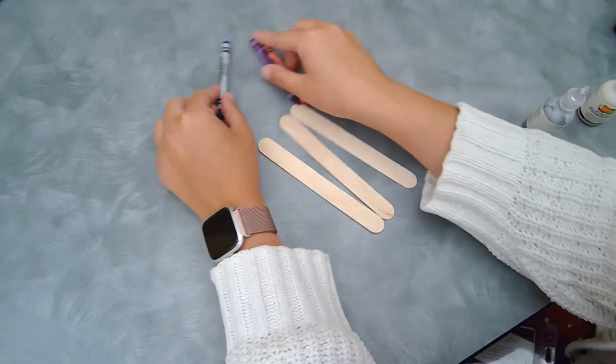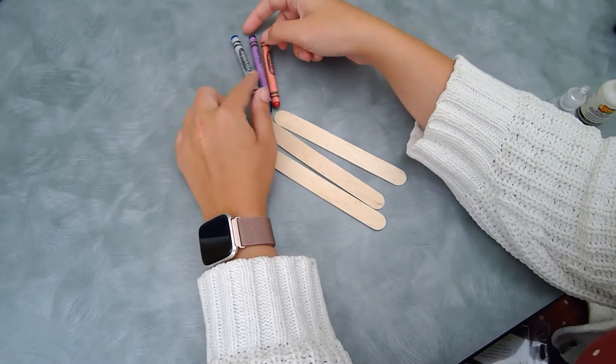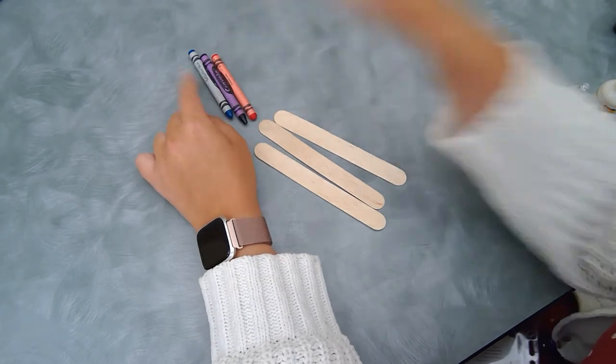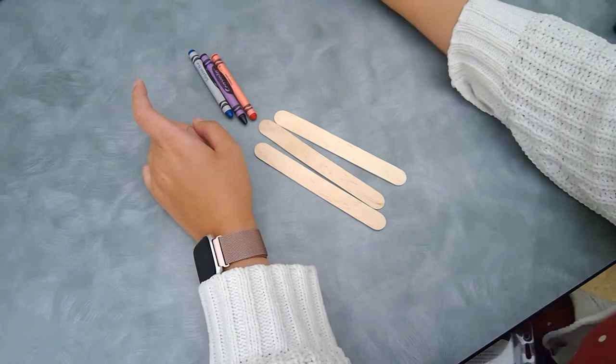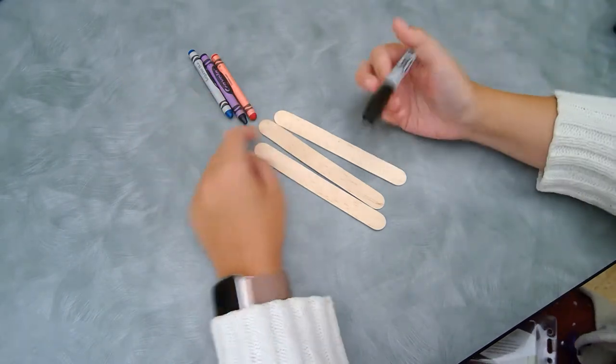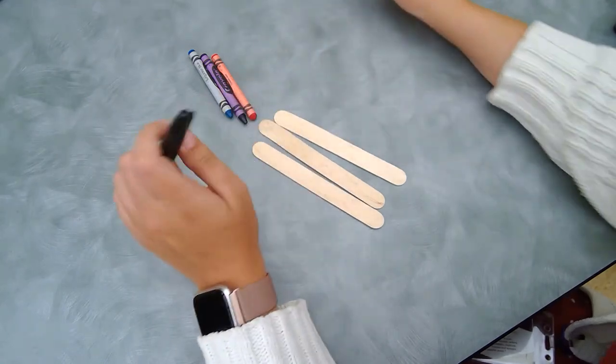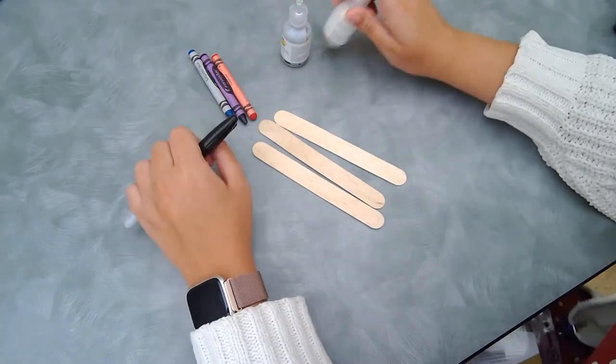You're gonna need some crayons, whatever colors you'd like. I am picking a turquoise blue, a blue violet, and a red for my lightsabers. You'll need either a black Sharpie or some other kind of black marker that you trust yourself with using. And then I am going to be using some puffy paint as well.